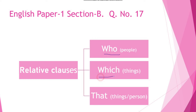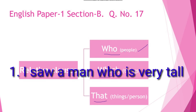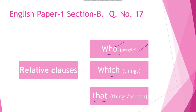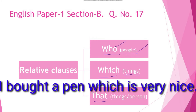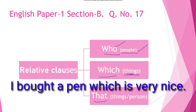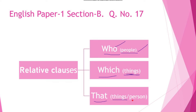Who is basically used for people, which is used for things, and that is used for things or people. For example, 'who' describes people: 'I saw a man who is very tall.' 'Which' describes things: 'I bought a pen which is very nice.' 'That' is useful for things and persons.